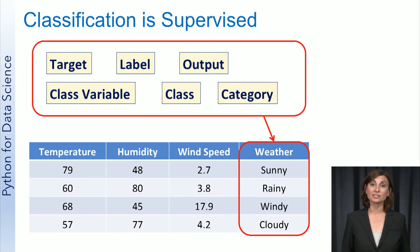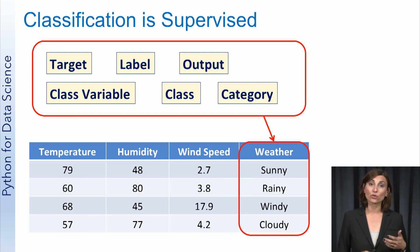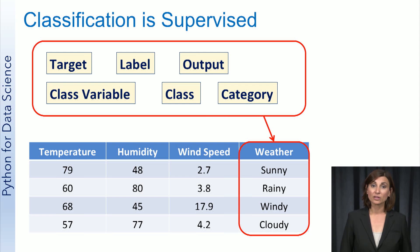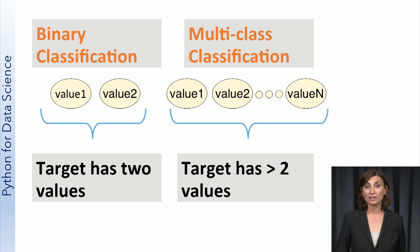Since a target is provided, we have labeled data, and so classification is a supervised task. Recall that in a supervised task, the target or desired output for each sample is given. Note that the target variable goes by many names such as target, label, output, class variable, category, and class.